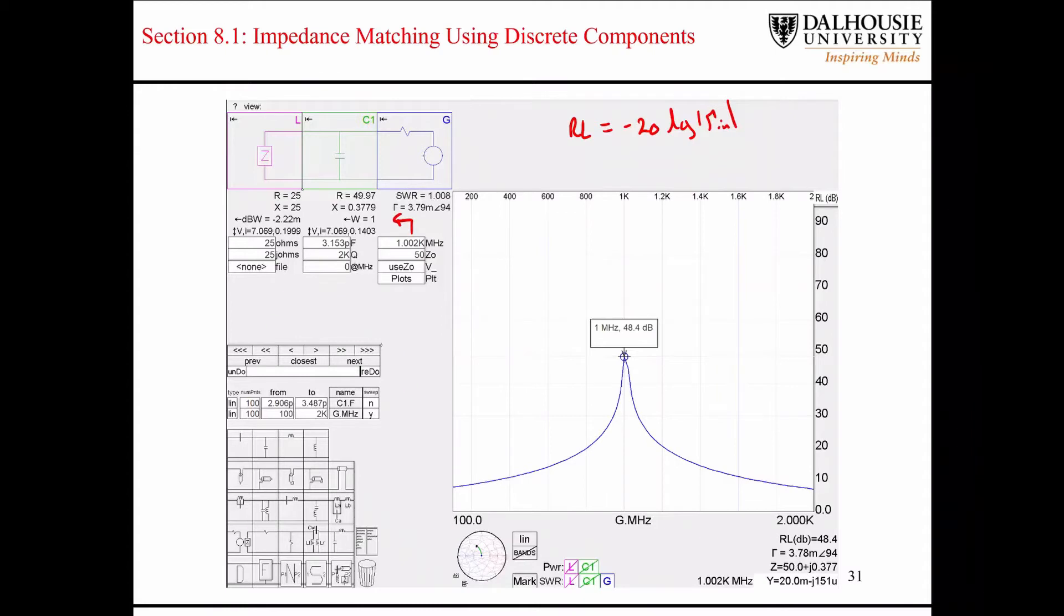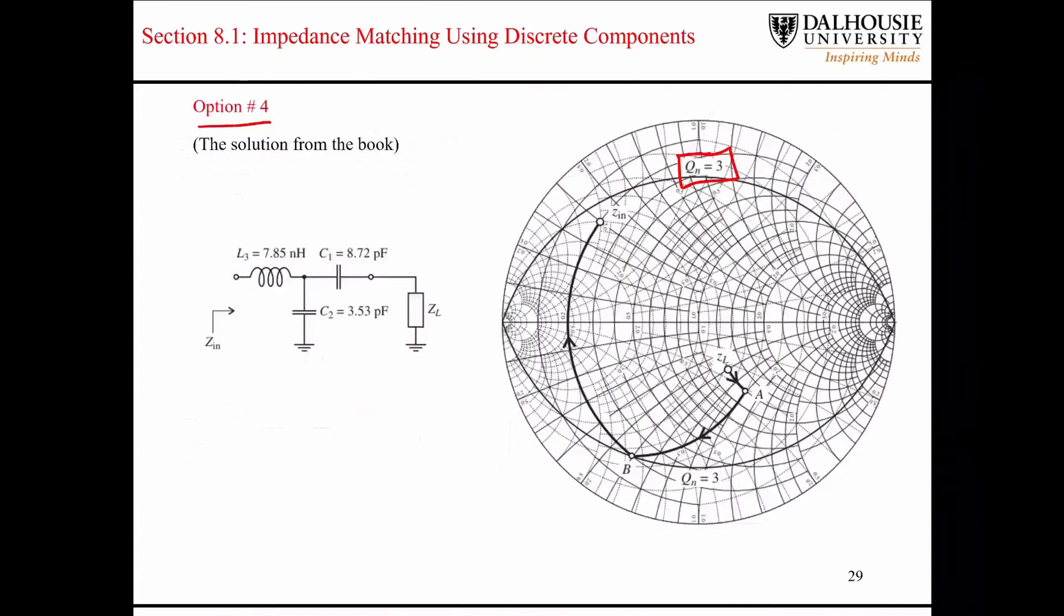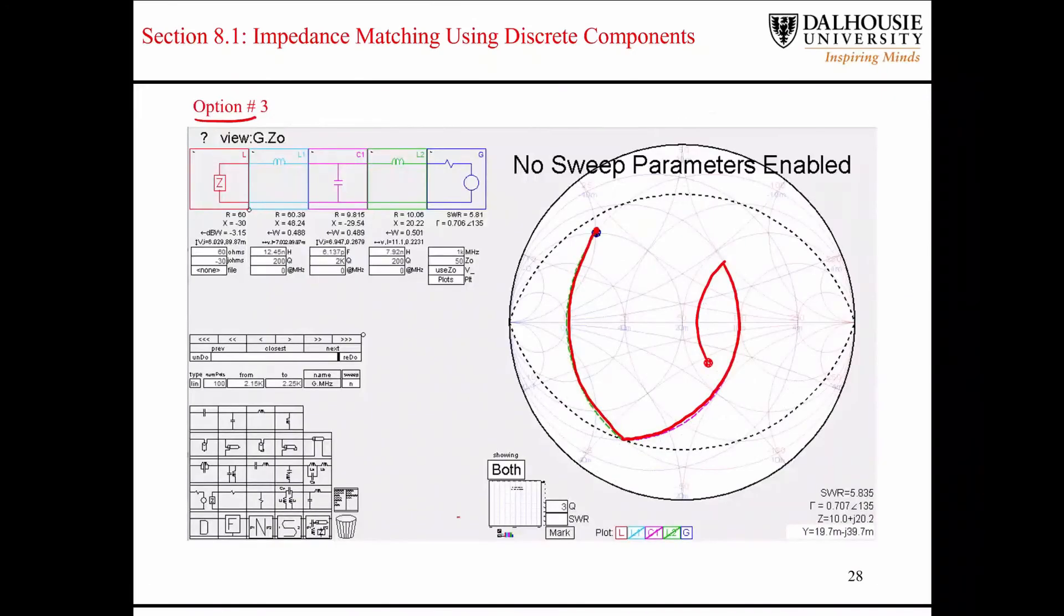In SimSmith, if you click on this little window down here, it will bring you back to the Smith chart. And if I go back here, you can see that there's the plot of the return loss. That's how you convert between the two. You just click this little window down here at the bottom.